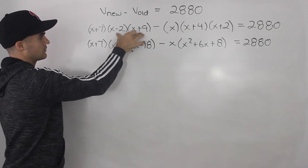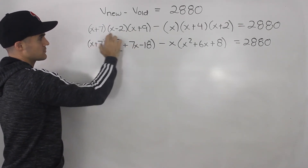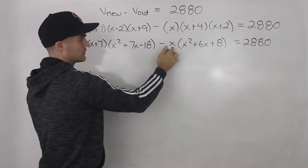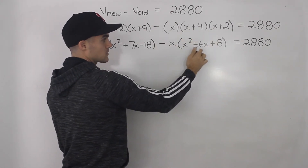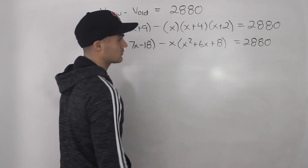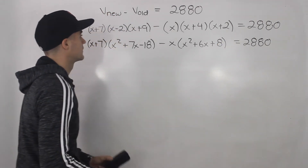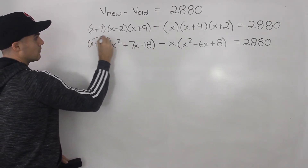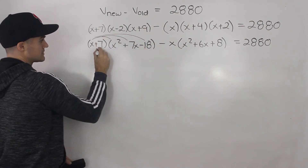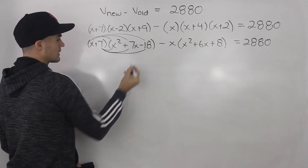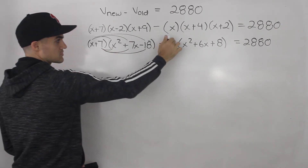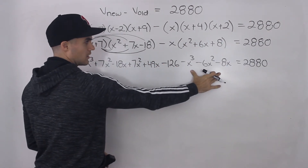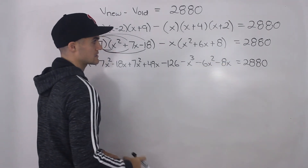First, foil the last two brackets of the new box expression, leaving (x plus 7) in front: that gives (x plus 7)(x squared plus 7x minus 18). For the old box, foil the last two brackets with x in front: that gives x(x squared plus 6x plus 8). All of this still equals 2,880. Now expand by distributing x plus 7 and x into their respective brackets.